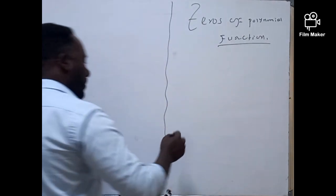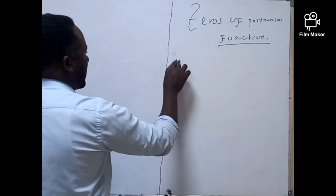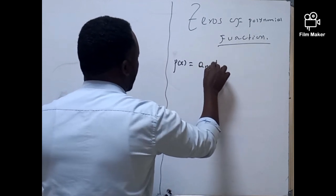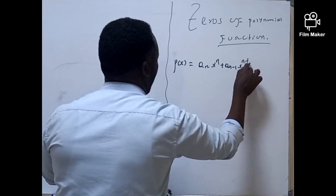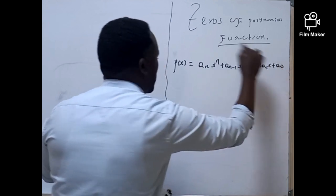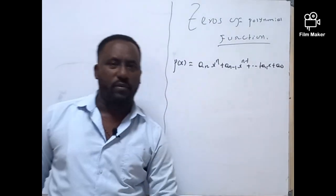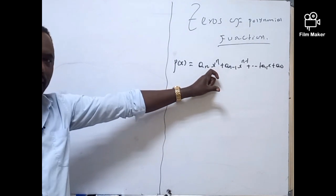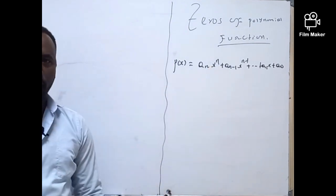As you know, a polynomial function is written as P(x) = a_n x^n + a_{n-1} x^{n-1} + ... + a_1 x + a_0. This is the general notation of the polynomial in general. You can look at my previous video about this polynomial in general.